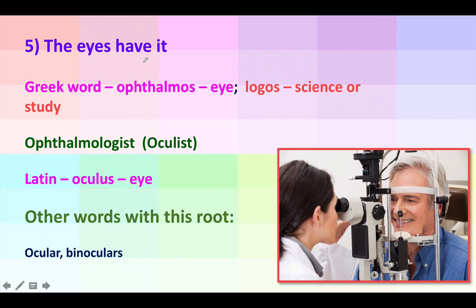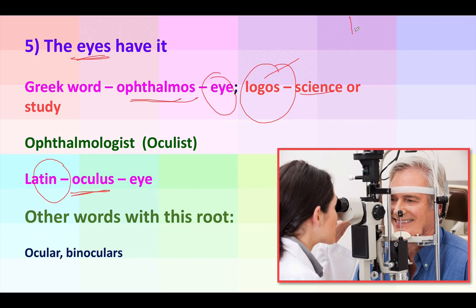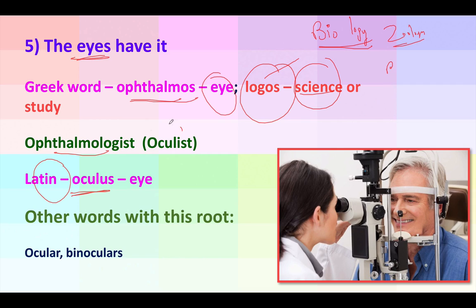Let's talk about one of the most beautiful organs — our eyes, our gateway to the entire world. The Greek word for eye is ophthalmos, but the Latin word for eye is oculus. Greek ophthalmos + logos (science/study) gives us ophthalmologist — a doctor who is a specialist in the eyes, treating diseases like cataract and glaucoma. The Latin-derived term oculist also means eye doctor, but in modern English we primarily use ophthalmologist.